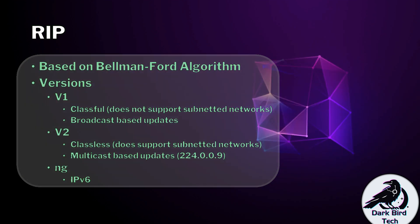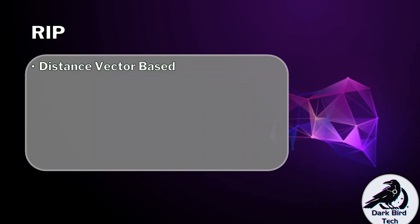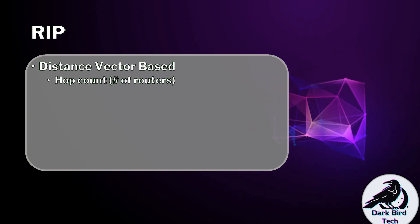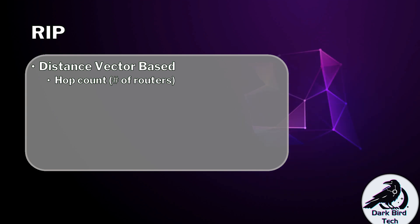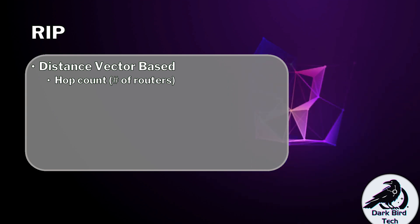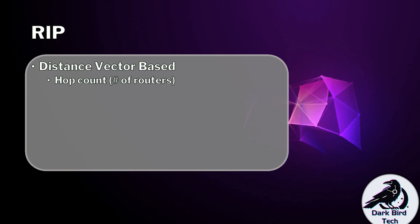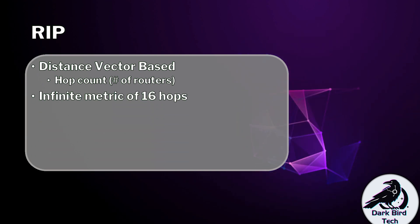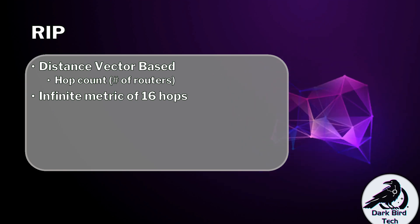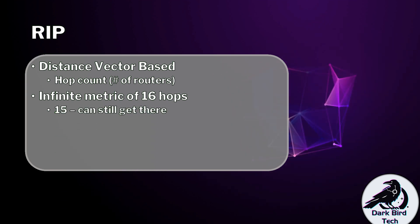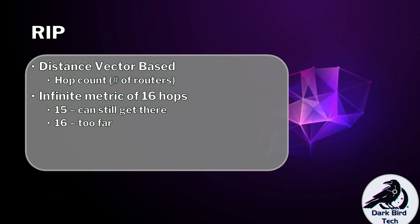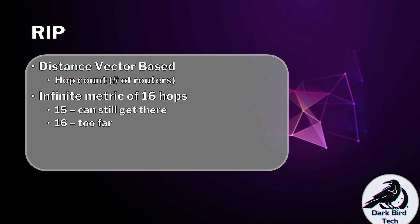RIP being distance vector means it cares about hop count — the number of routers being passed through. Regardless of whether we're looking at RIP version 1, version 2, or RIP-NG, the infinite metric is 16 hops. If a destination network is 15 hops away, we can still get traffic there. But if it's 16 hops away, it's too far — it might as well be on Saturn.